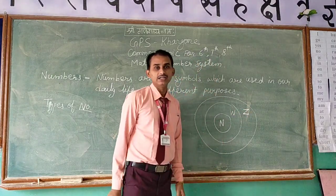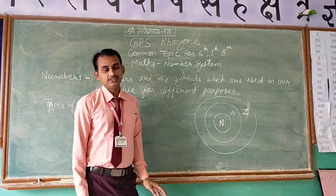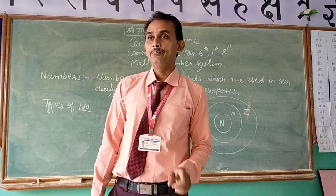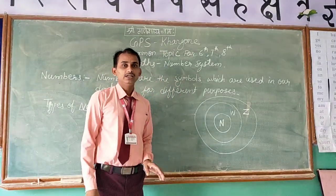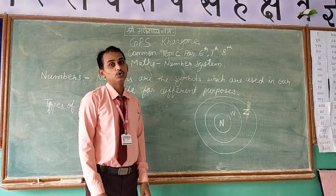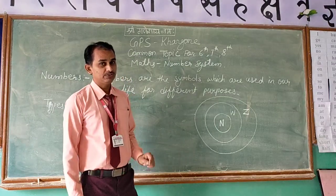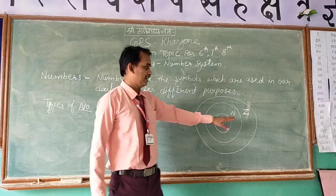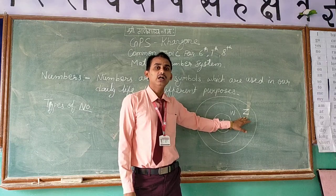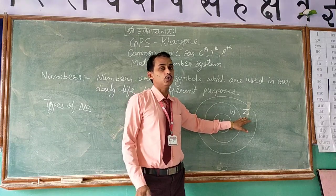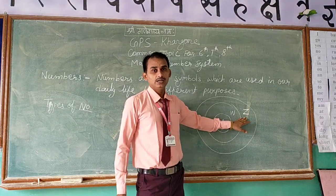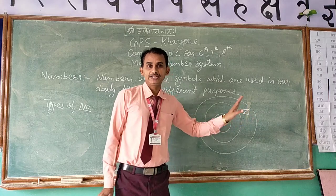Integers are represented by Z. Why Z? Z is taken from the German word 'Zehlen', which means to count. Integers include all positive numbers and all negative numbers along with 0. Note that 0 is taken separately because 0 is neither a positive number nor a negative number.